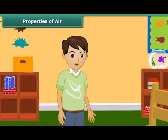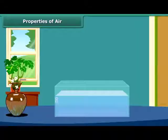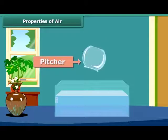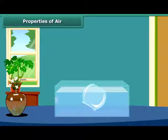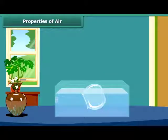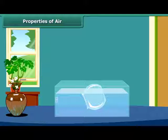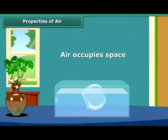Air occupies space. To understand this, take a pitcher and dip it straight into the water. See, no water enters into the pitcher. Now tilt the pitcher slightly. See, the air bubbles are coming out of the pitcher and water starts entering into it. So you can see that the pitcher is not empty.